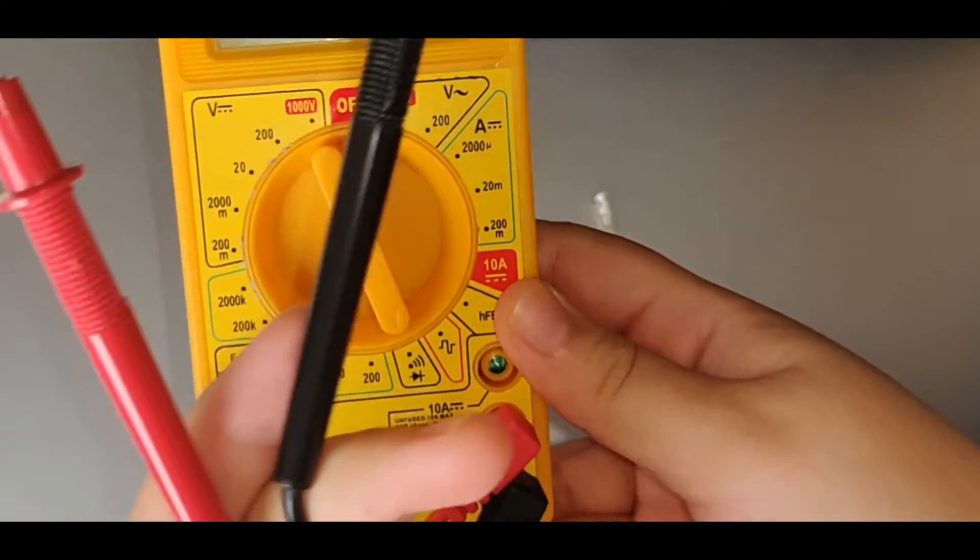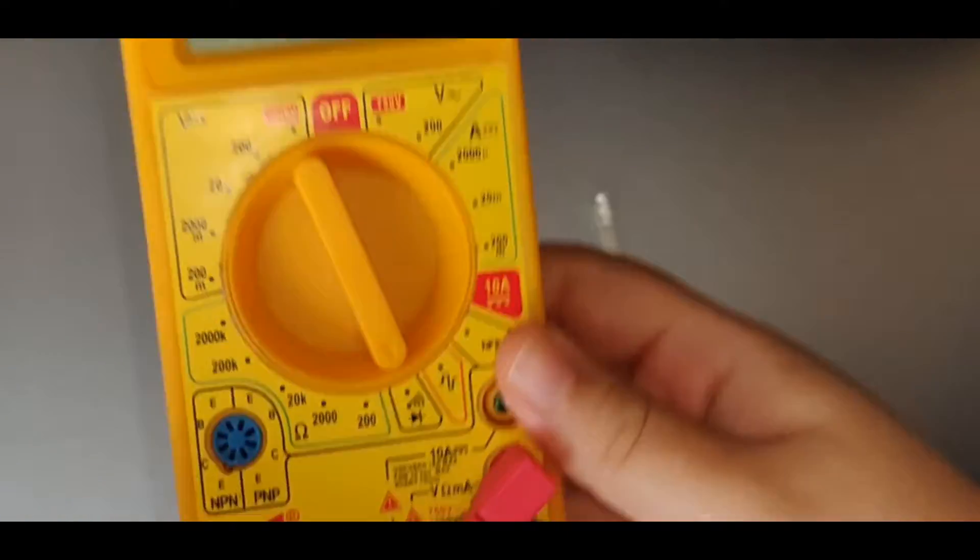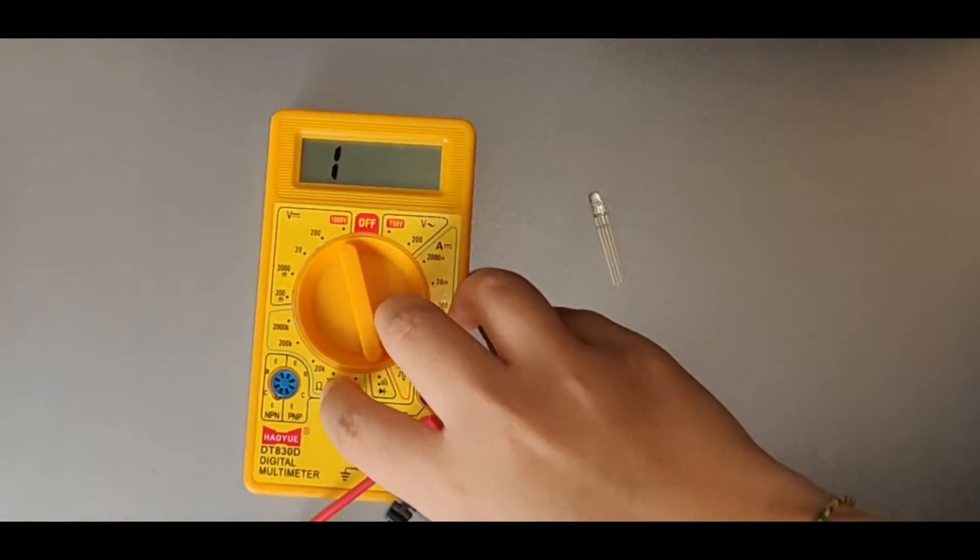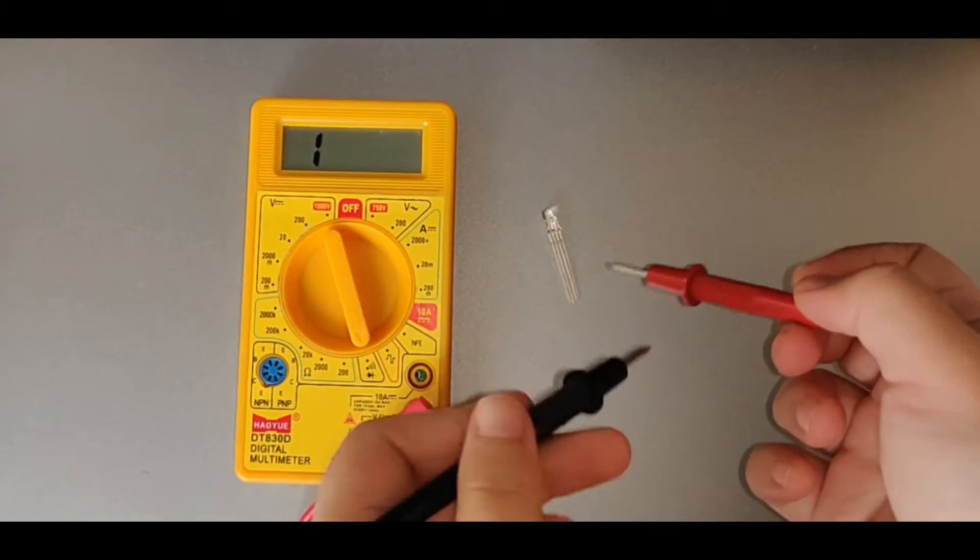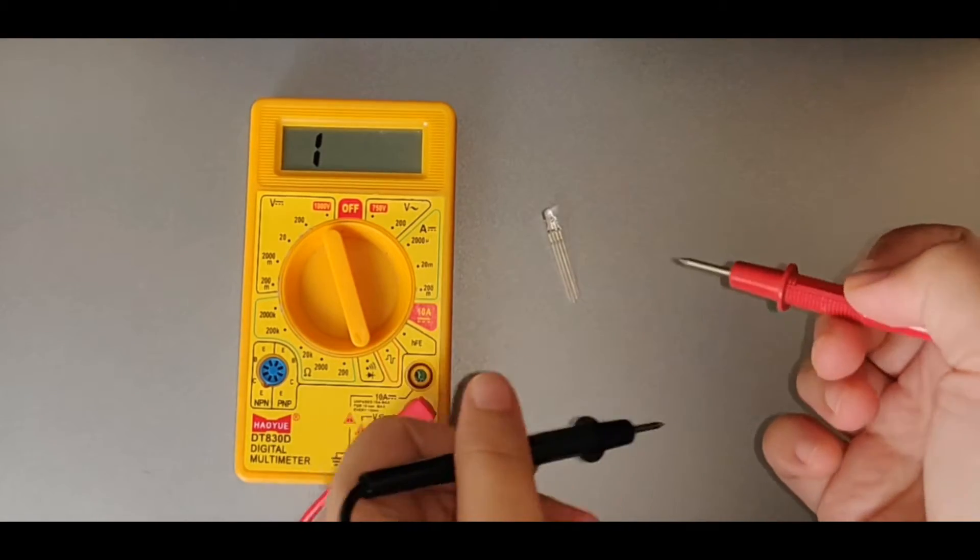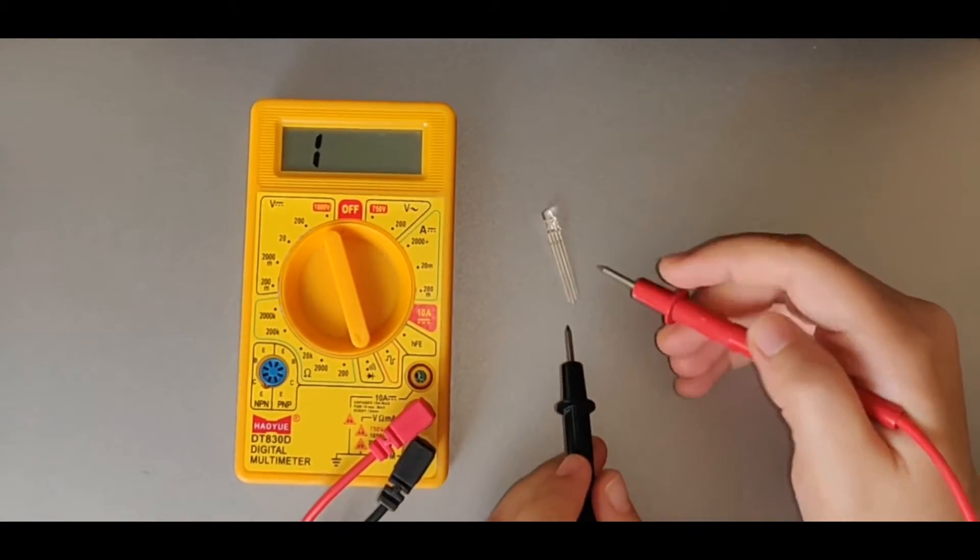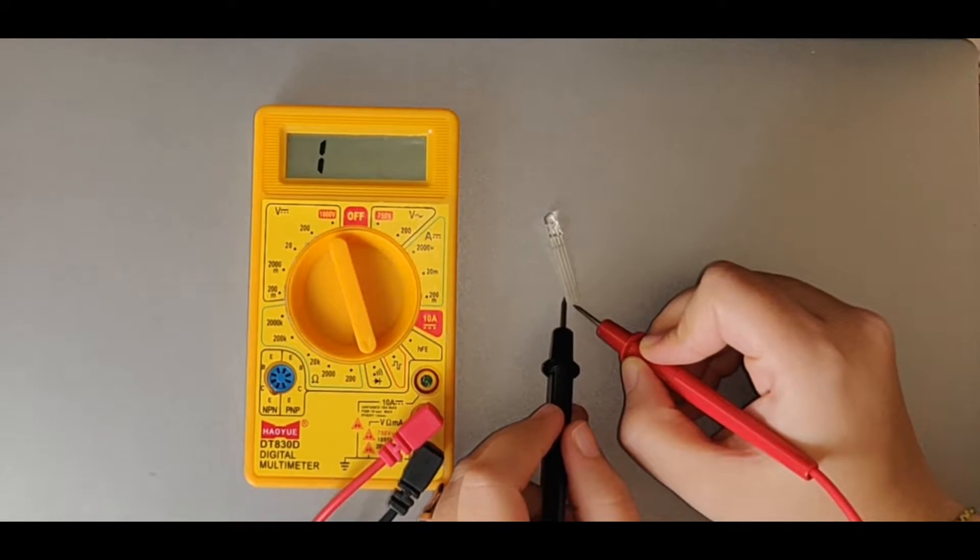So we'll place the positive tip of the multimeter on the longest lead and the negative tip on any of the other terminal. If the respective red, green or blue LED lights up, then it's a common anode LED.